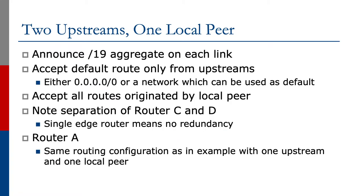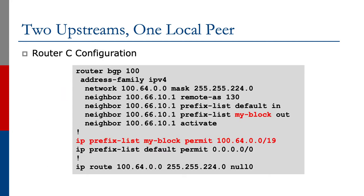To configure this, we announce the slash 19 aggregate on each link. We accept the default route only from the upstreams, and accept all routes originated by the local peer. The configurations are the same as we saw earlier. Router A's configuration is the same as in previous examples — we announce to them what we originate. Router C configuration: we accept the default in and send the aggregate out. Router D configuration to the other upstream: default in, aggregate out.